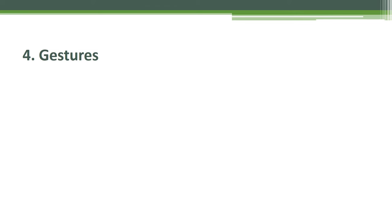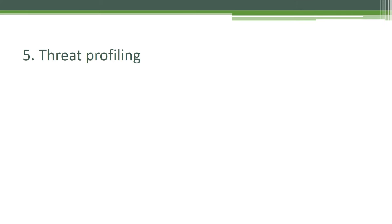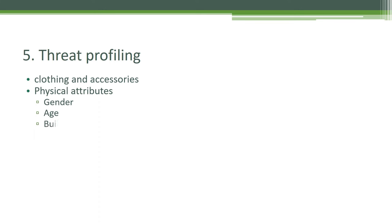Gesture: physical gesture provides obvious indication of people's actions without verbal communication. Types of gestures include waving the hand, clamping, and signaling via fingers to a person. The CCTV operator should perceive gestures and determine possible danger to safety or security to the organization and the people working at that site. Number five, threat profile: if you find any suspicious person or activity, you have to make a profile of that incident or person, noting physical attributes such as gender, age, build, and ethnic or cultural identifiers.